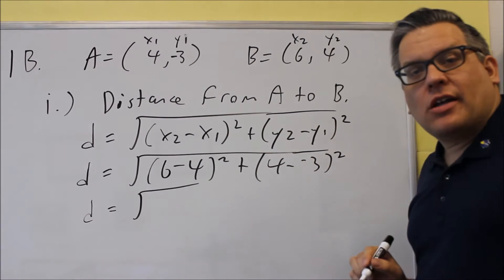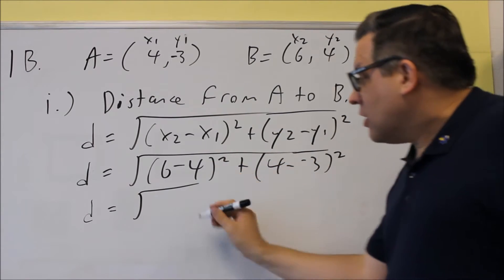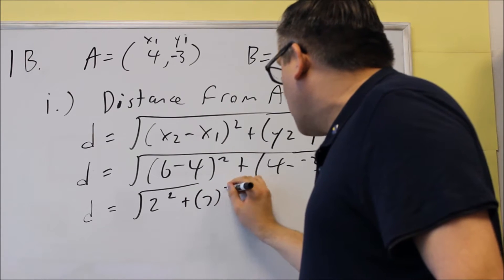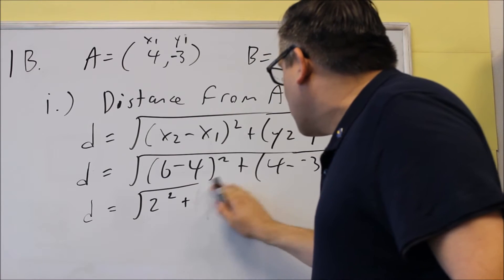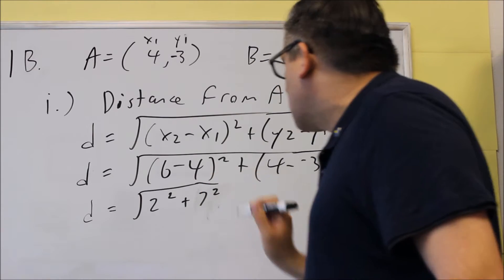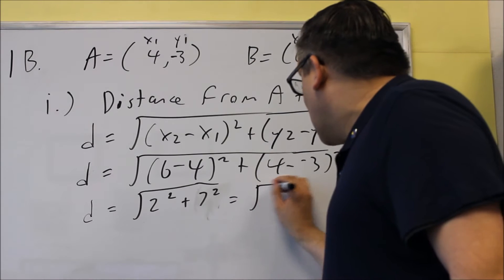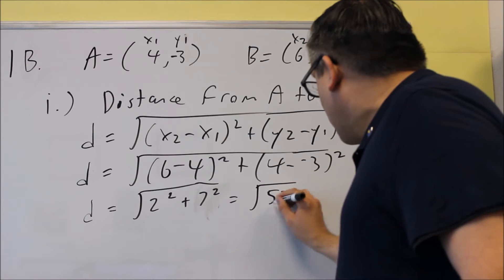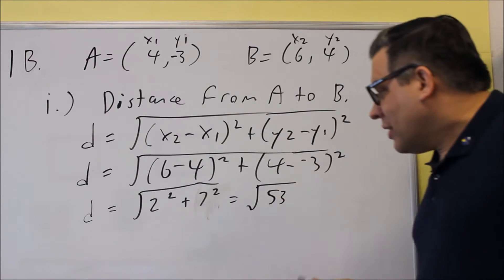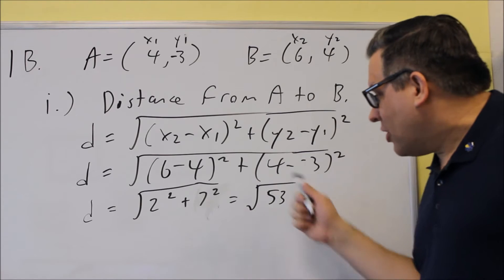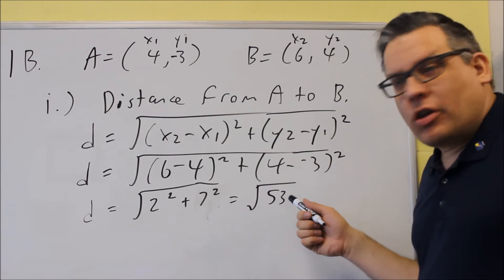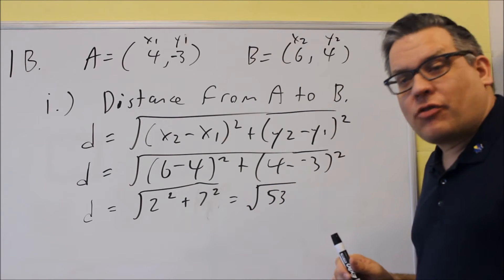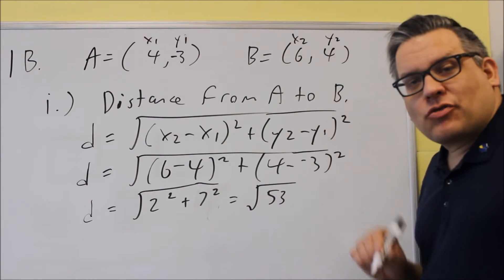We're going to simplify inside each of these. You'll get a 2 squared, and then this will give you a positive 7 squared. So we don't even need these parentheses, so we're going to do 2 squared plus 7 squared. And that's going to give us 4 plus 49, which is going to be the square root of 53. If you can break down the square root, you want to go ahead and do that, but this one, you're not going to be able to do anything with it. 53 doesn't have any way of breaking down to where we can take a number out front. So the square root of 53 would be as far as we need to go.